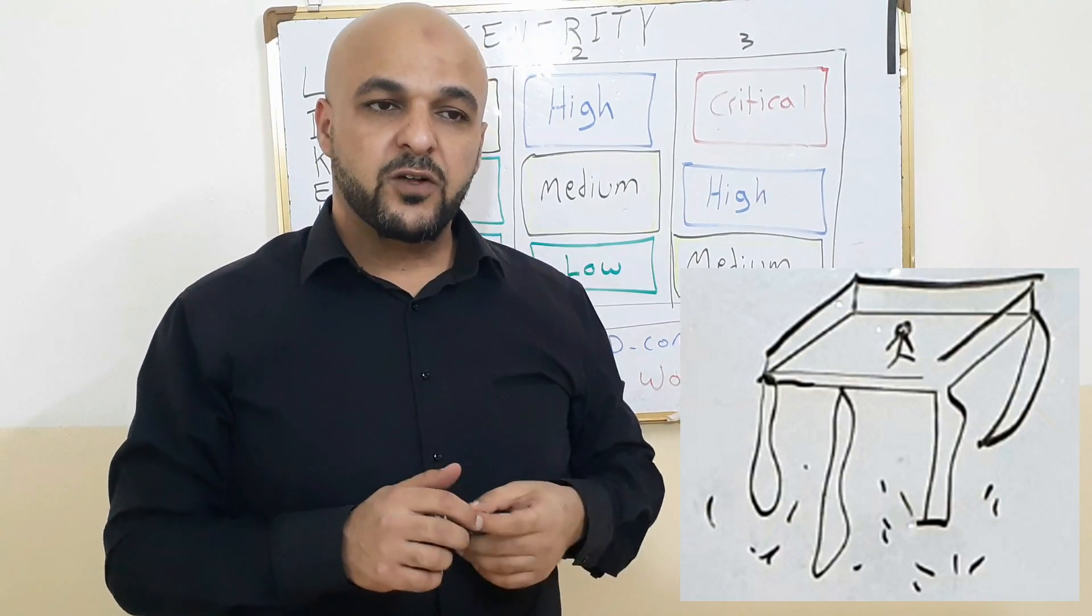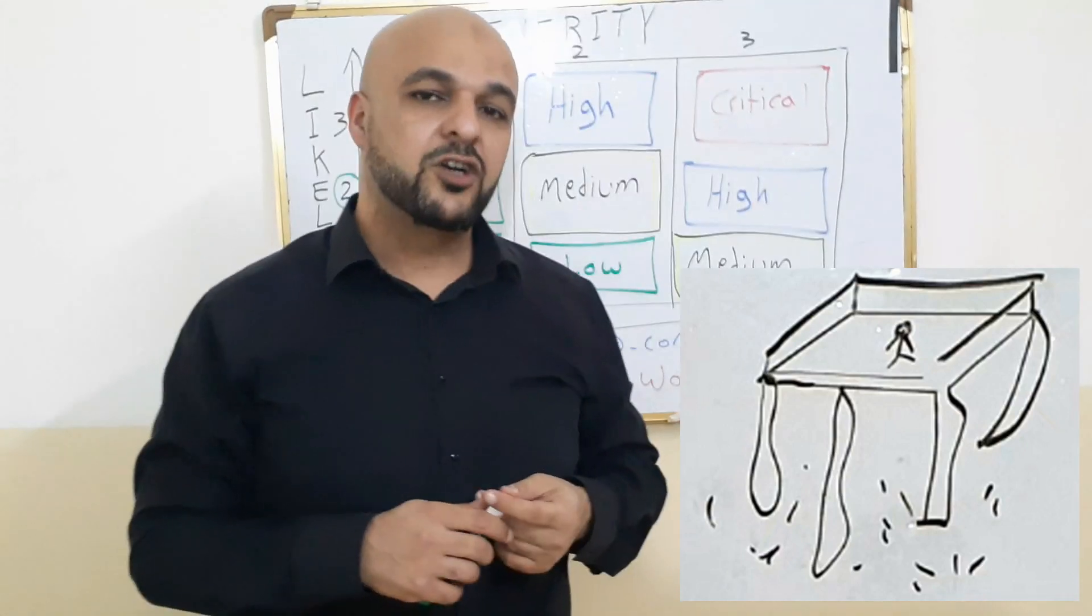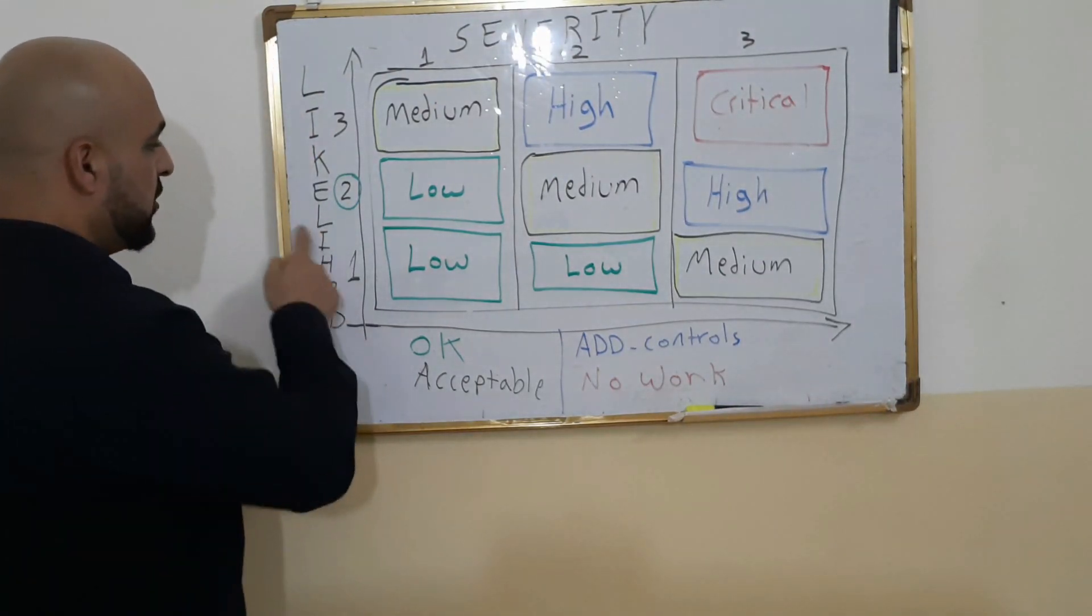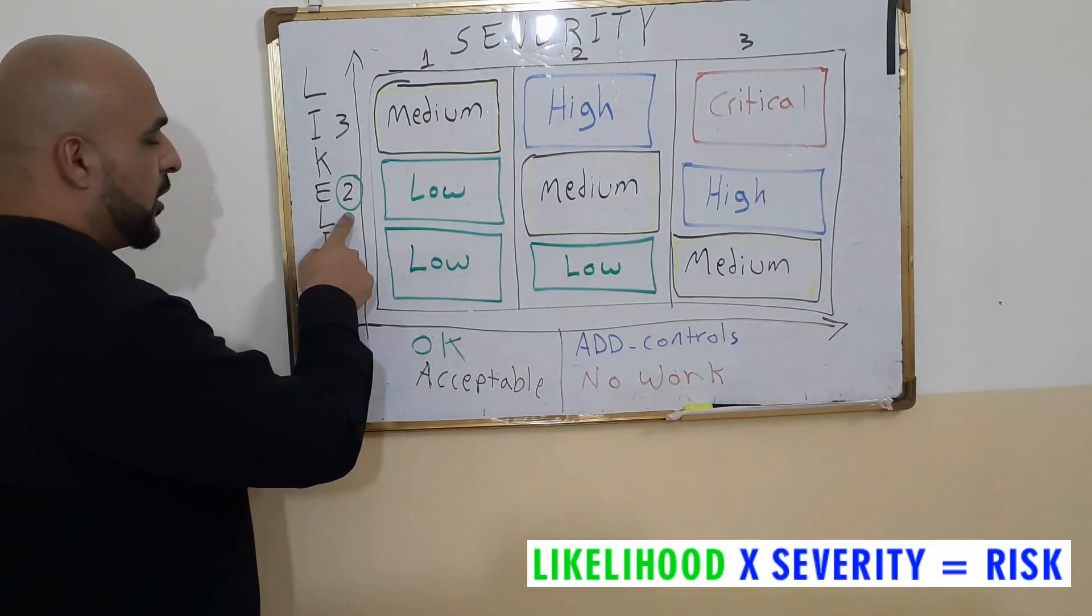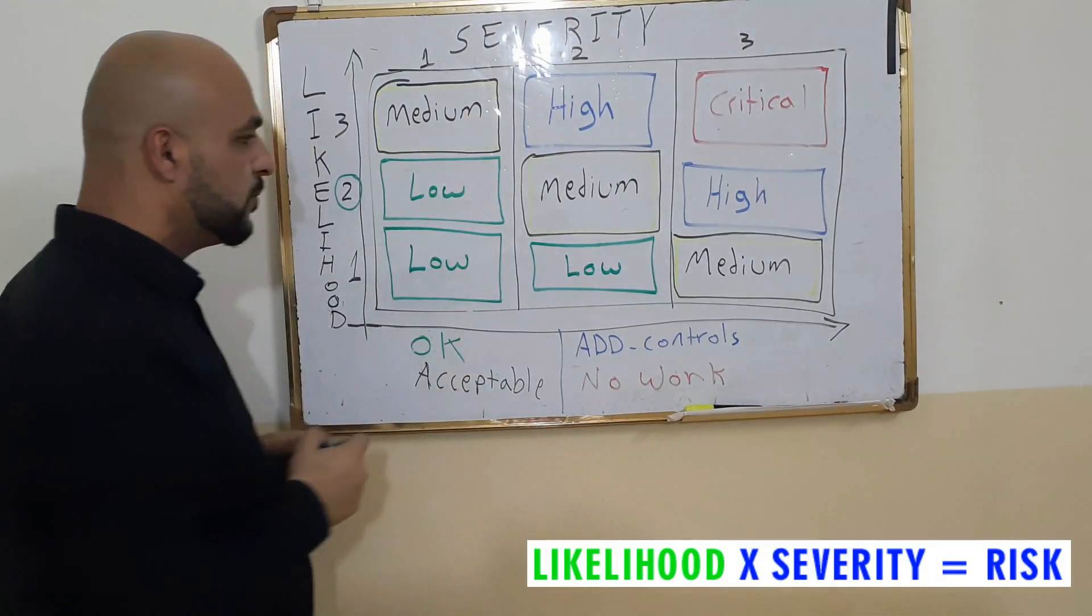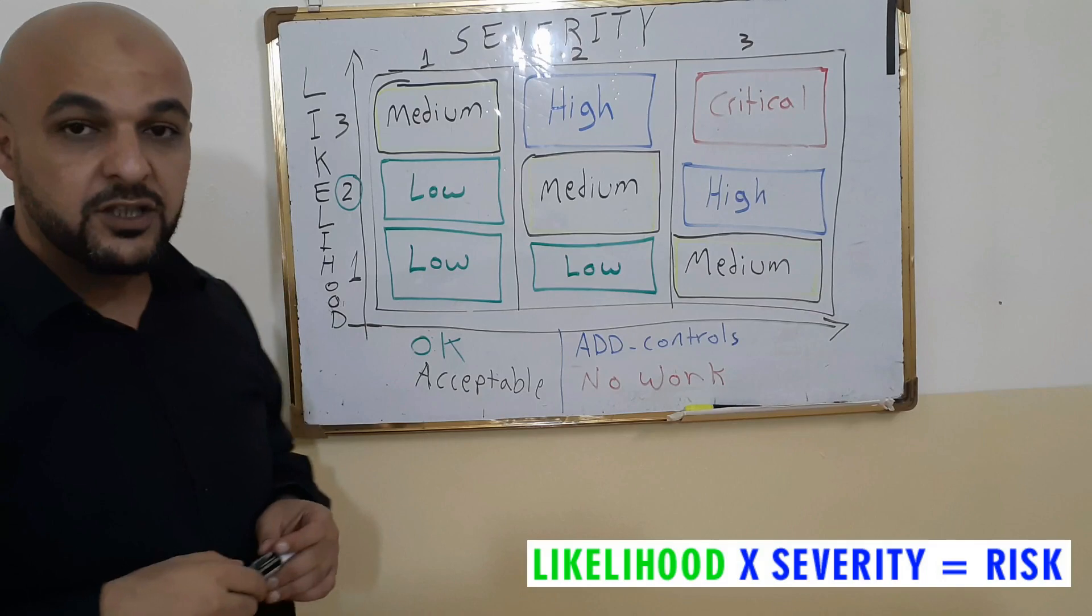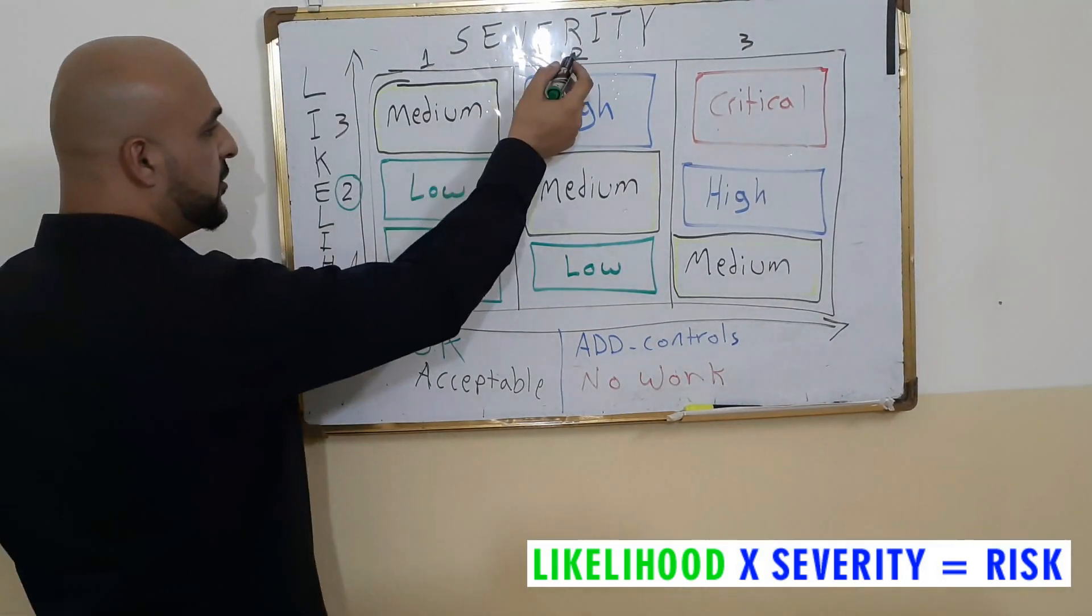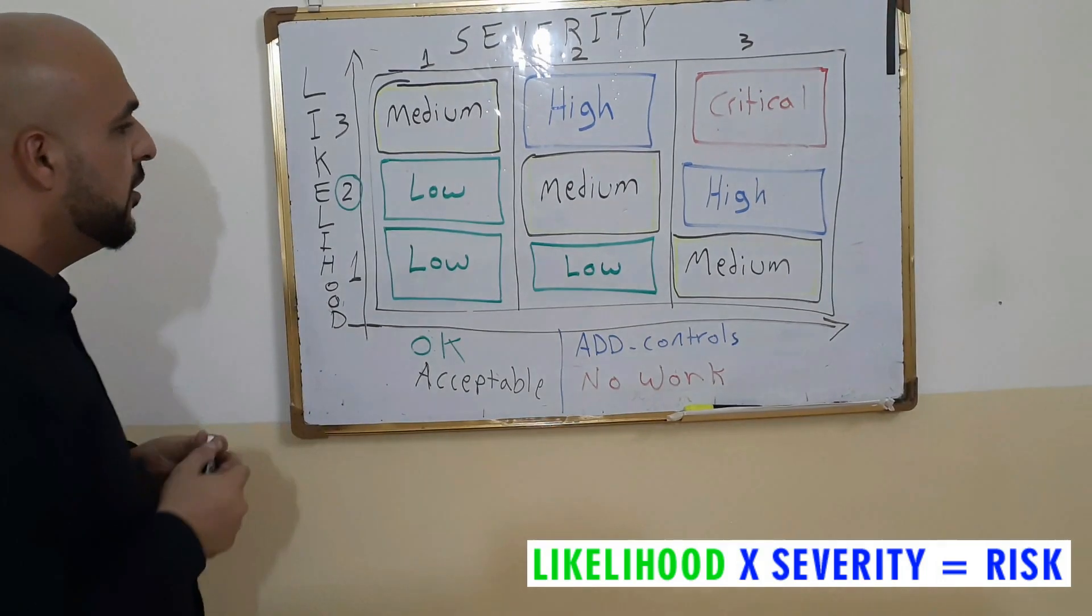All right. So if he falls, he's going to hurt himself. He's going to hurt himself. So the likelihood is two. The likelihood is two. And the severity is also two. The severity is also two. So two multiplied by two, we will have four.